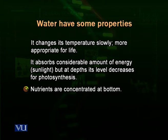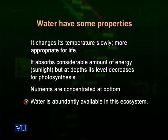Nutrients are usually concentrated at the bottom, because everything present in a water ecosystem — organisms, fallen leaves, dead organisms — all settle to the bottom, making it rich in nutrients. Water is abundantly available in aquatic ecosystems since the ecosystem itself consists of water, so water is not a limiting factor here. This makes aquatic ecosystems very supportive for life forms, though light penetration at the base can be a problem.